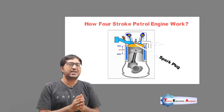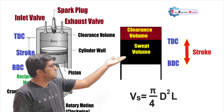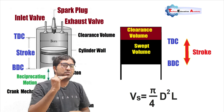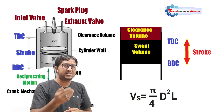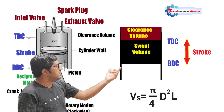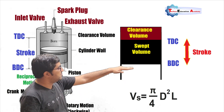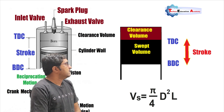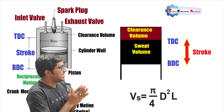Clearance volume is measured in cc, which means cubic centimeter. Swept volume is the volume covered by the piston inside the cylinder as it travels from one dead center to another dead center. The equation for swept volume is: area of the cylinder is pi by 4 d-squared, and the traveling distance of the piston from BDC to TDC is the stroke length L. So swept volume equals pi by 4 times d-squared times L.